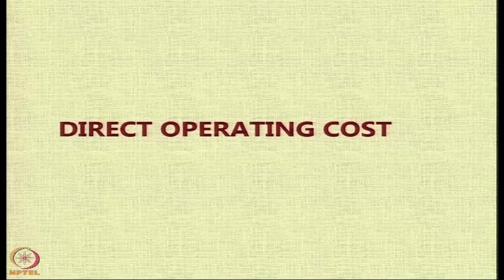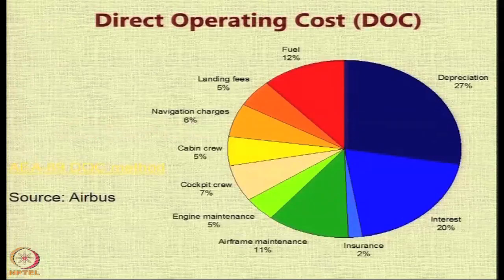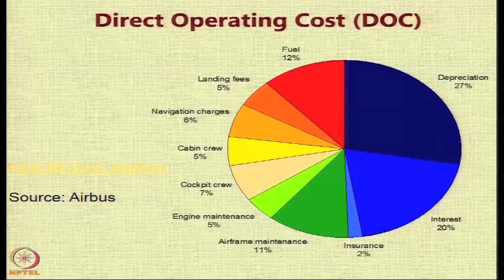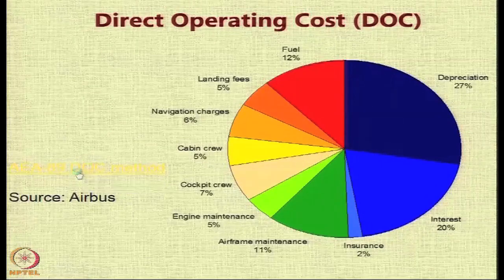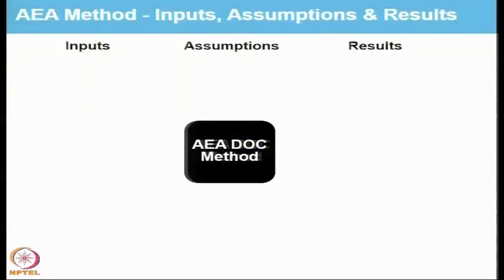Let us now look at the direct operating cost, which is what the airlines are mostly concerned with. The direct operating cost basically consists of costs which are related or associated with the operation of the aircraft. Some important terms and a typical pie chart are shown here. We will have a look at a model given by the Association of European Airlines, or AEA, which is a widely used model in literature to estimate the direct operating cost of a particular aircraft while operating on a particular route.